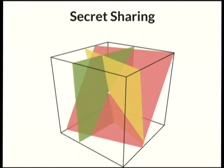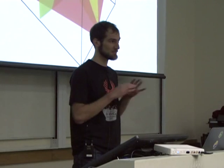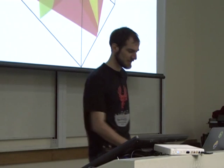There are only three planes here but you could easily do more as long as the secret point goes through them. And of course you could increase the number of dimensions — the same applies, and the names get a lot cooler because you're dealing with hypercubes and intersections of hypercubes. This secret sharing threshold scheme is called Blakely's scheme. It's one of many — I just chose this one because it's much easier to visualise than just math equations.